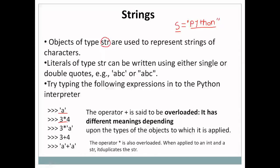If we type 3 times 4 on the shell, what do you think it will print? 3 times 4 is 12. But if I type 3 times 'a', look at the parameters — the operands for the star operator here are of different types. With same-type integer operands, multiplication is performed and the result was 12. But here the first operand is integer and the second operand is of type string, that is str.